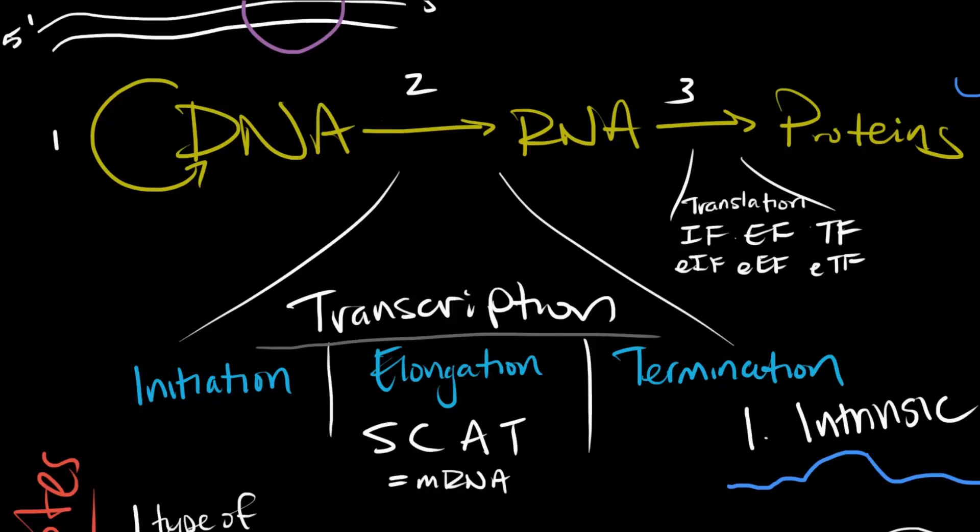Now, I can see people getting confused with initiation factors, elongation factors, and termination factors, so listen carefully. Although each of the three processes can be considered to have all three steps, only translation has things called initiation factors, elongation factors, and termination factors. If you see IF, EF, or TF, that refers to translation exclusively, which I will not discuss further in this video.